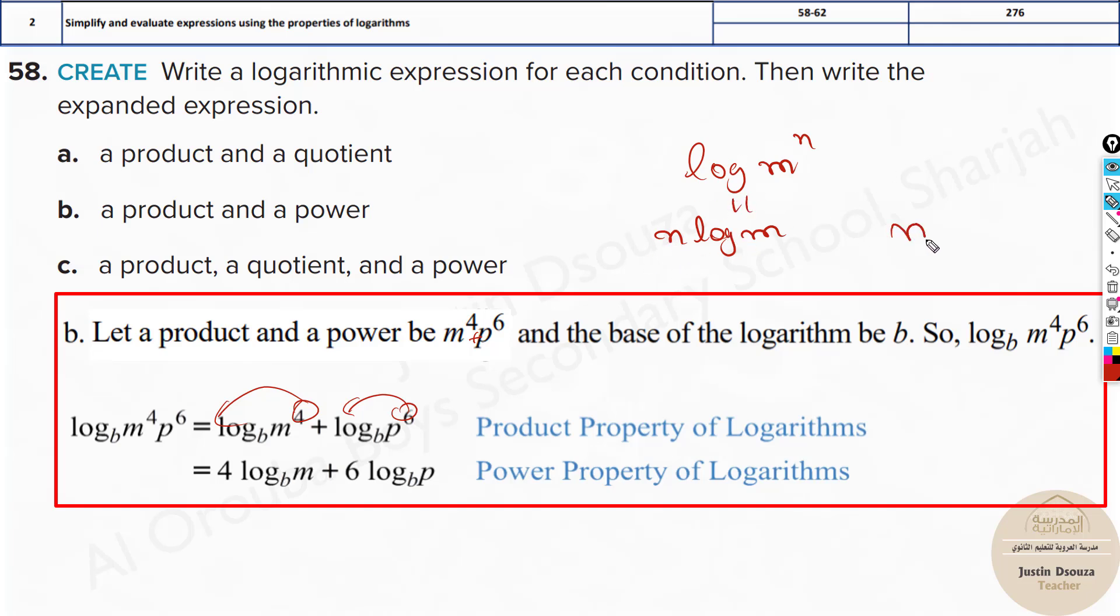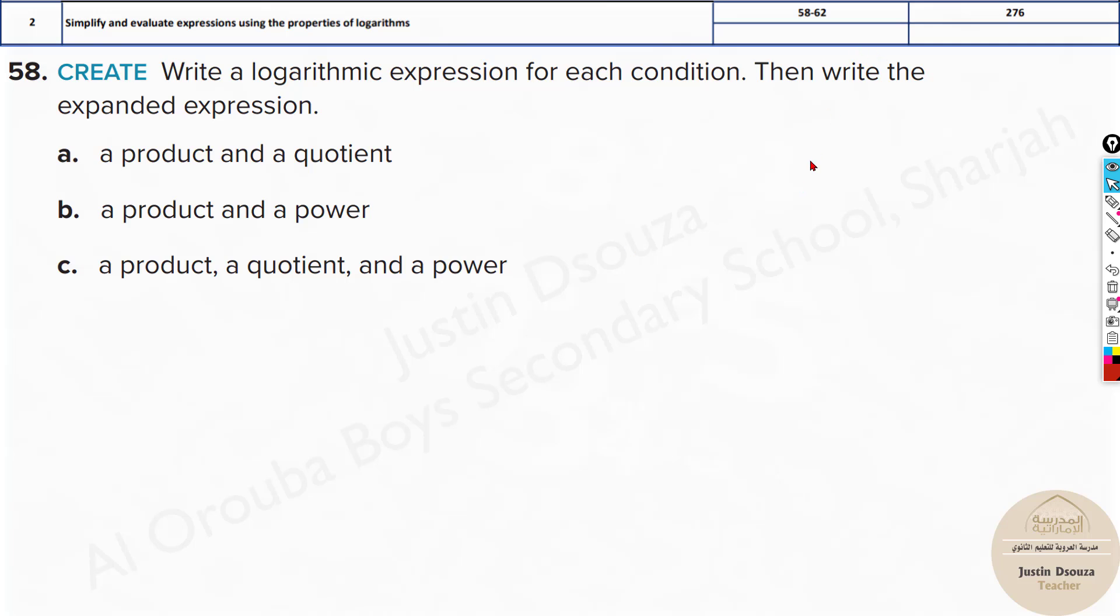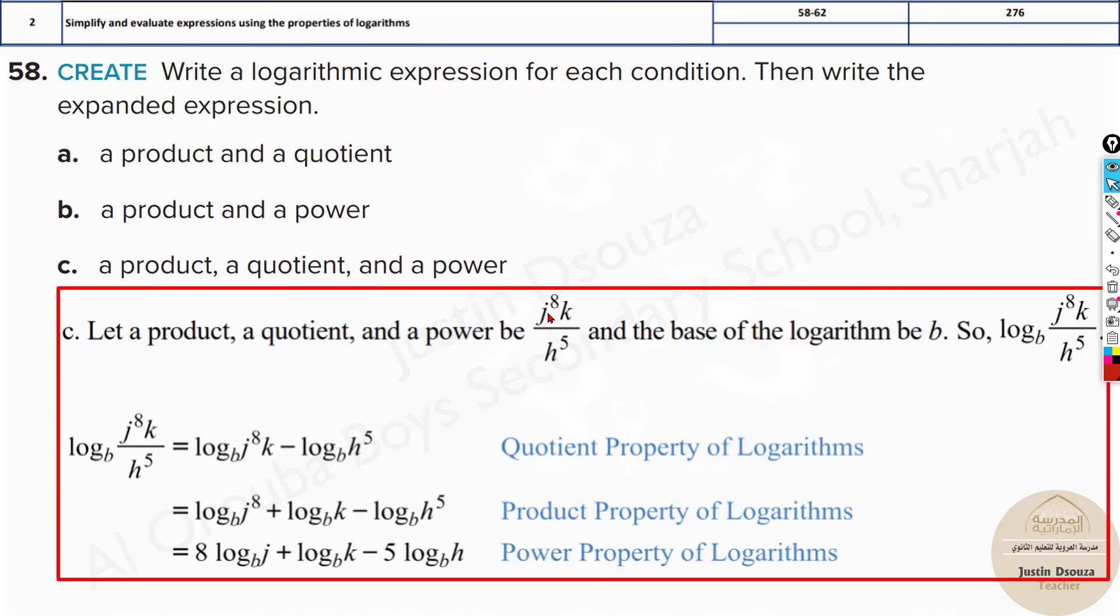If you have the question in terms of n log base m, and you want to write it as power rule, you can write this as log m to the power n. Lastly, we had product, quotient, and power together. First split it out with minus, then use the multiplication, then use the power rule. All the different properties of logarithms are used here.